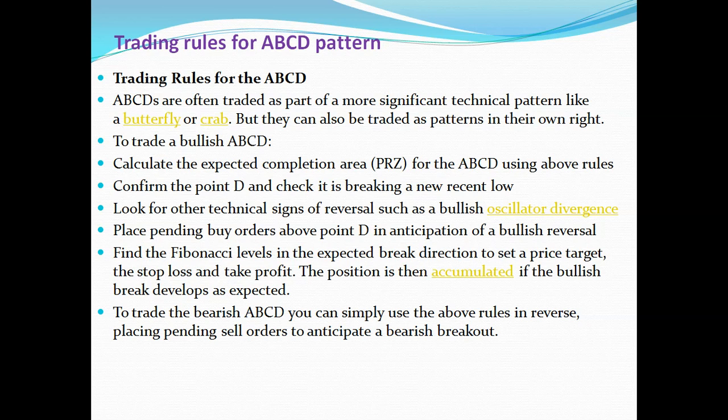Trading rules for the ABCD pattern: ABCD is often traded as one of the most significant technical patterns, like butterfly or crab, but it can also be traded on its own. To trade a bullish ABCD: calculate the expected completion area (PRZ) for the ABCD, confirm the D point and check it is breaking a new recent low, look for other technical signs of reversal such as bullish oscillator divergence, place pending buy orders above point D in anticipation of a bullish reversal, and use Fibonacci levels in the expected break direction to set price targets, stop loss, and take profit. The position is then accumulated if bullish breaks develop. To trade the bearish ABCD, simply use the above rules in reverse, placing pending sell orders to anticipate a bearish breakout.